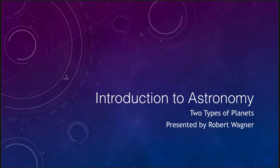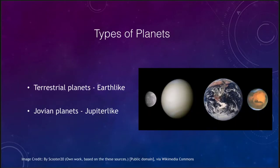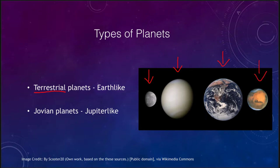The first set is the terrestrial planets. These are the planets that are a lot like the Earth, and therefore we call them terrestrial. That includes Mercury, Venus, the Earth itself, and Mars. So these four are what we call the terrestrial planets. They are all very close to the Sun — the first four planets — and they are all rocky worlds, things that we could actually land on. In fact, we have had soft landings on three of these planets.